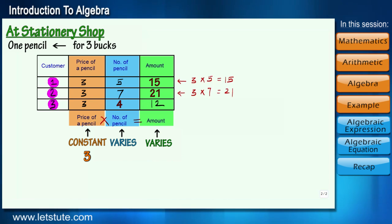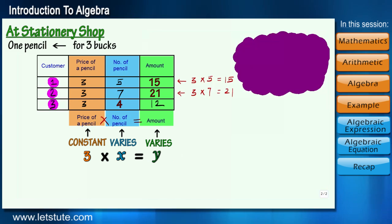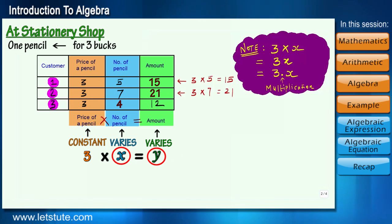So if we denote number of pencils by x and the total amount as y, in general we can write it as 3x equals y. Friends, 3x simply means 3 multiplied by x, or sometimes 3 dot x. The dot also represents multiplication. Now note that here x and y are unknowns whose value is not fixed and it's varying. Hence in algebra, unknown numbers are also known as variables.